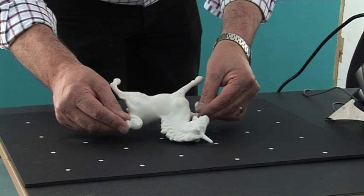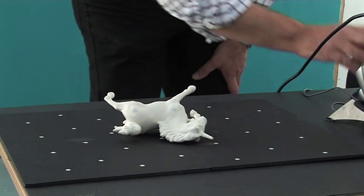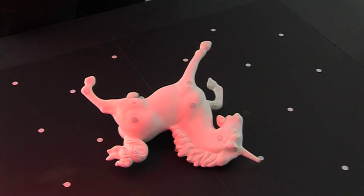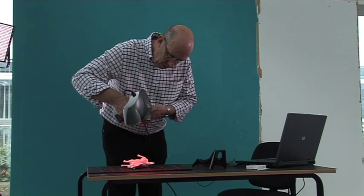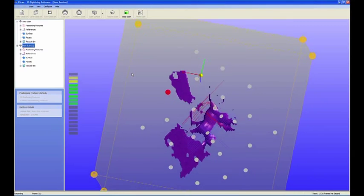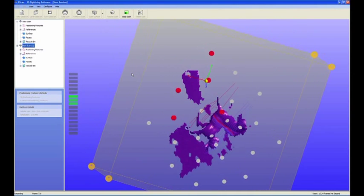The surface is picked up on the Z-Corp software and generated on the computer. After the first scan, the model needs to be flipped to enable the underside to be captured.